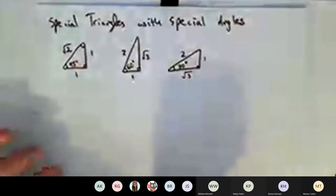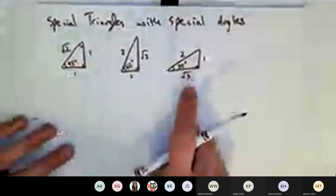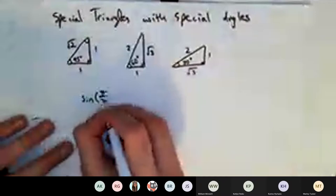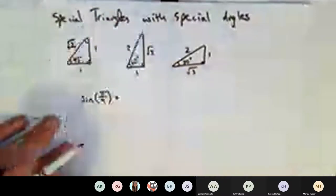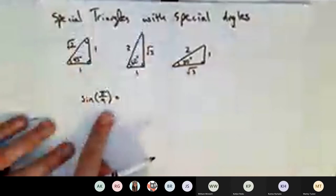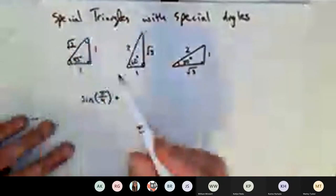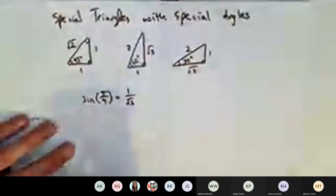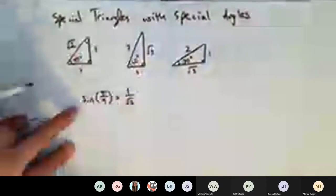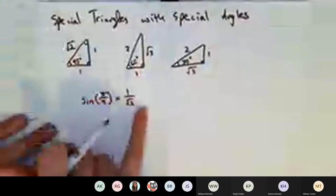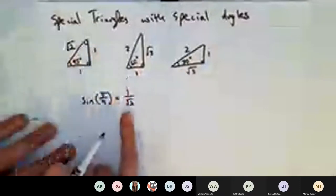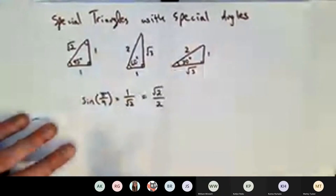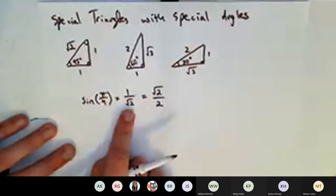With these special angles, we found we can calculate things like sine of π/4 very quickly just by looking at the special triangle with that 45-degree angle and remembering that sine is opposite over hypotenuse. The trig function takes in an angle and outputs a ratio of sides of the triangle. Since it's a special angle, it outputs a nice, clean, exact answer.